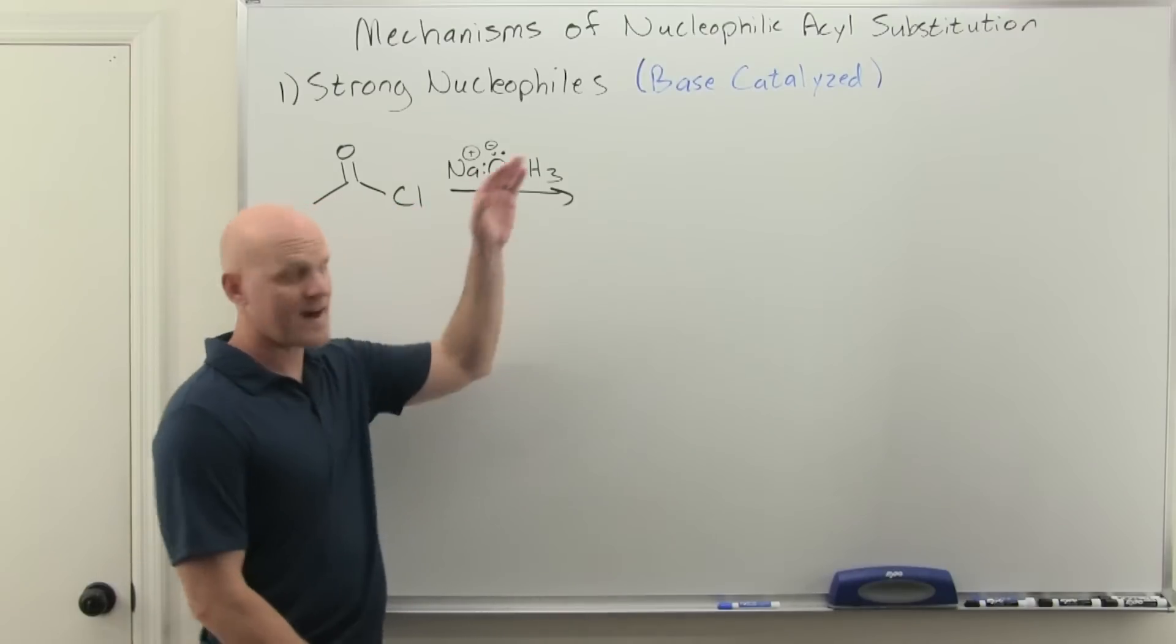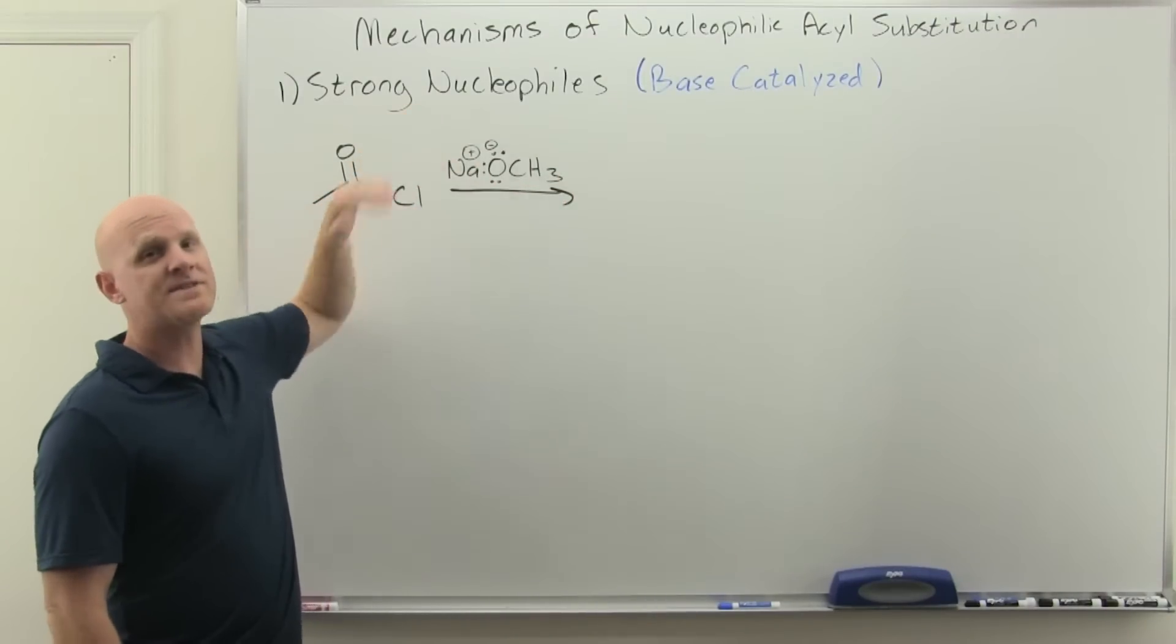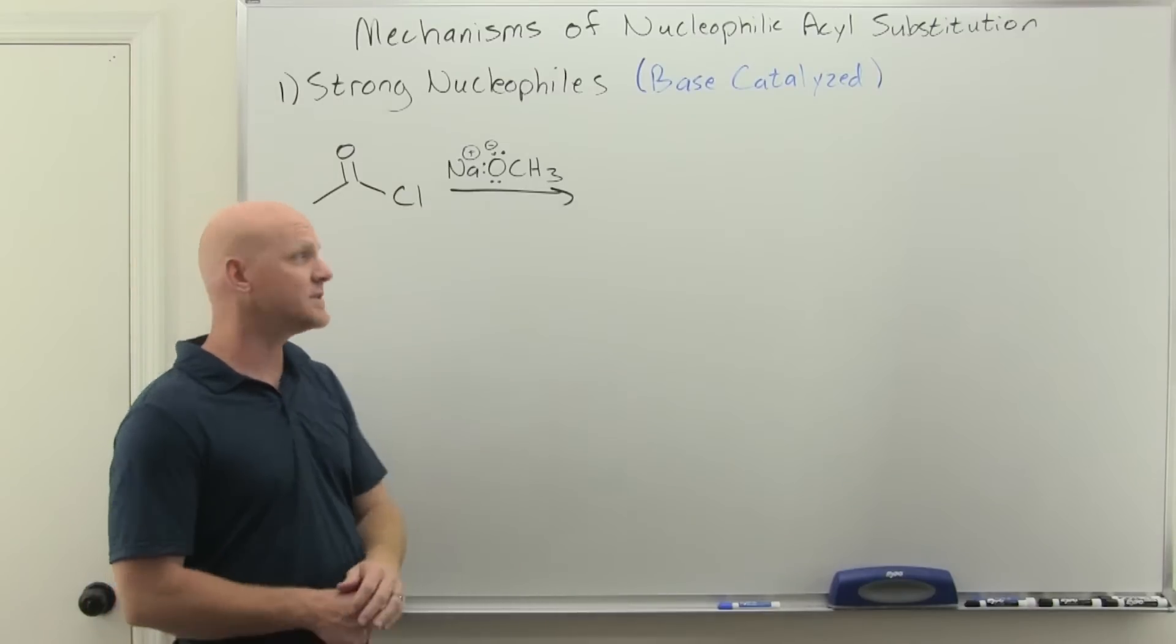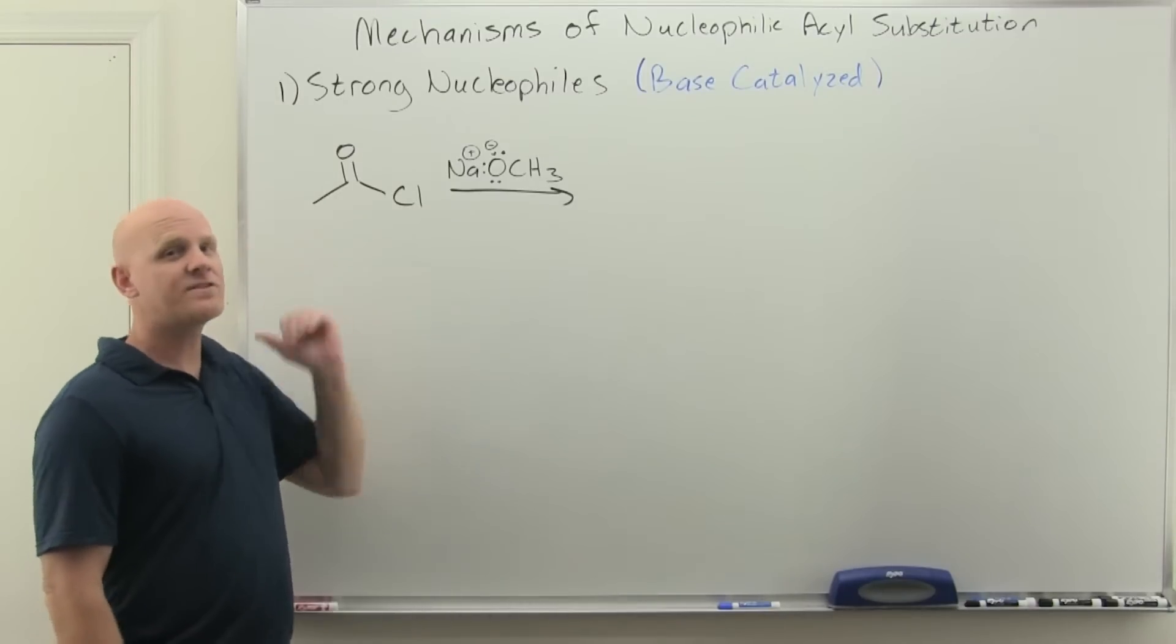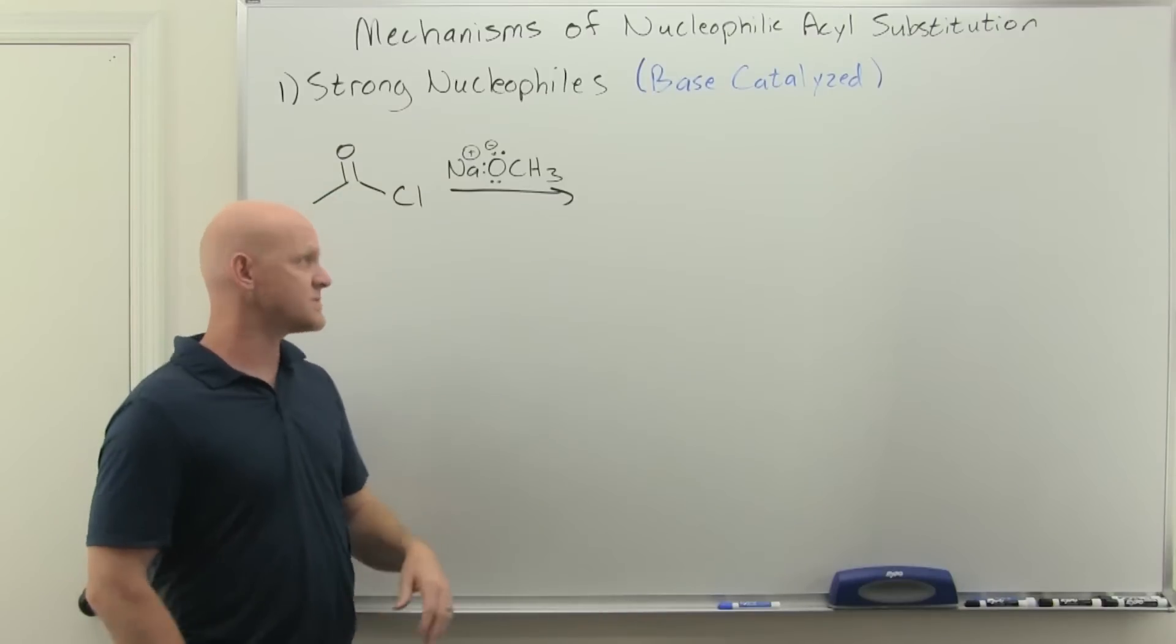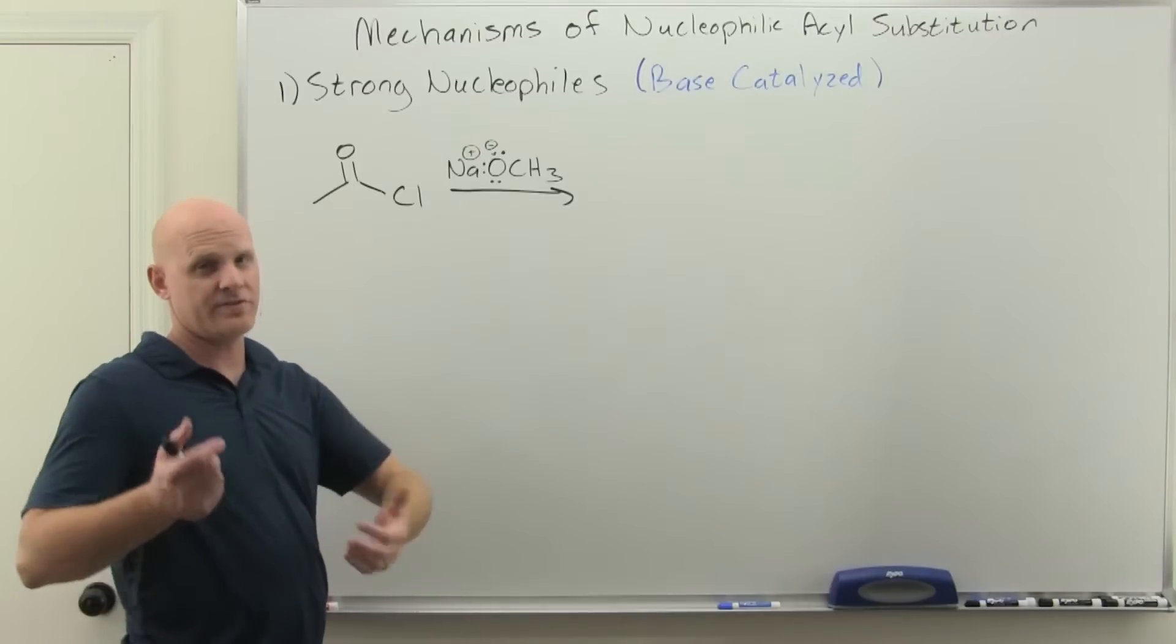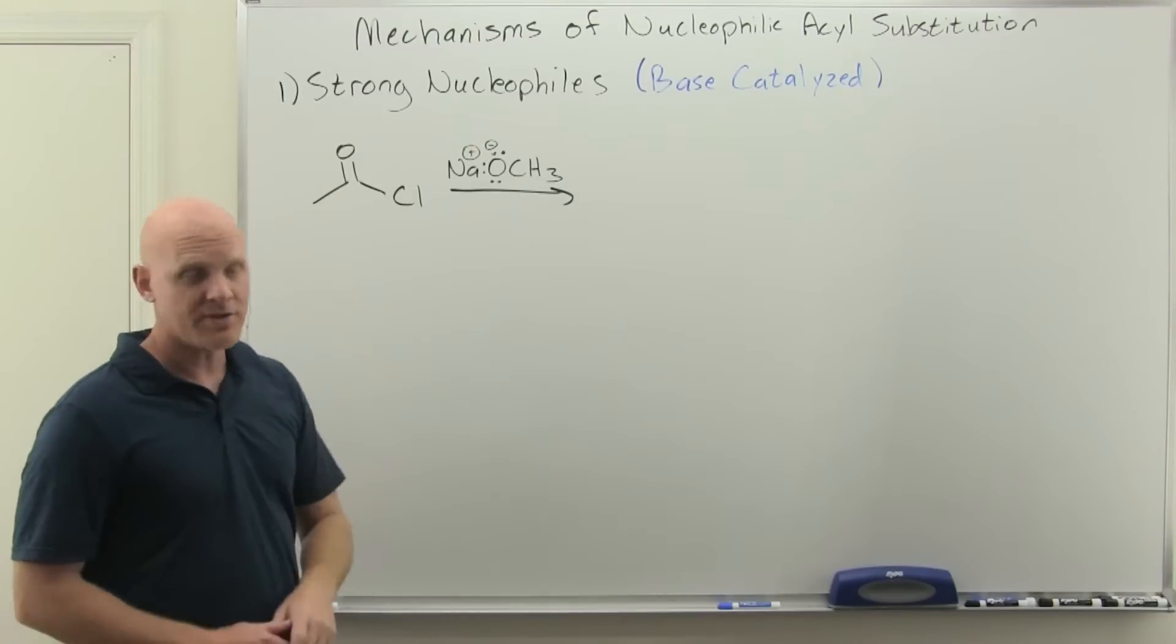All right, so we're gonna start off base catalyzed, and that's what I referred to it in the last lesson. It can also be referred to as one in the presence of a strong nucleophile. Start us off with an acid chloride and the strong nucleophile or base catalyzed - this is the easiest of those three mechanisms. Here we're gonna add the appropriate alkoxide to form the ester of choice, in this case a methyl ester.